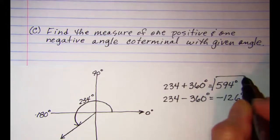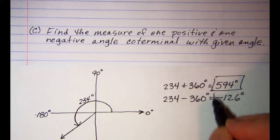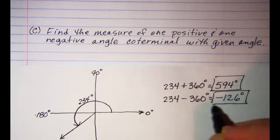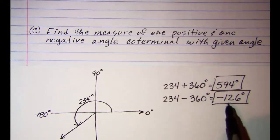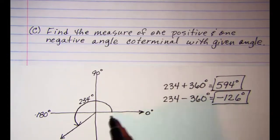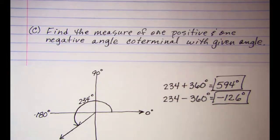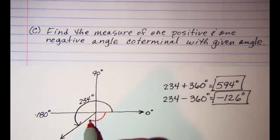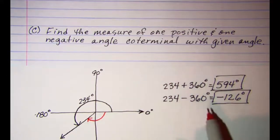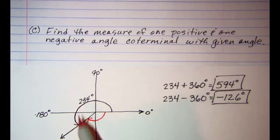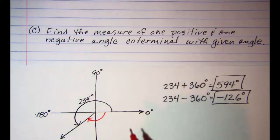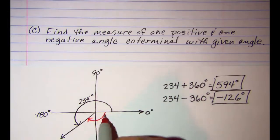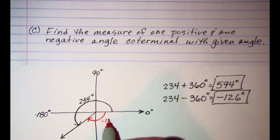So 594 is our one positive coterminal angle and negative 126 is our one negative. Notice that negative 126 goes in the clockwise direction starting with the positive x-axis. The angle indicated with the red arrow is negative 126 degrees.